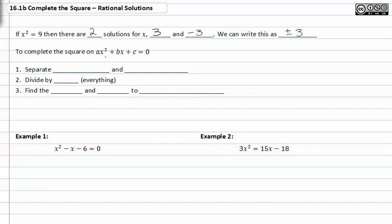To complete the square on ax squared plus bx plus c equals zero, we have to follow three steps. The first one is separate numbers and variables. In this case, the variable is c. Next we divide by a. When we divide, we divide all the terms by a. Thirdly, we find this new c using the formula and add to both sides.